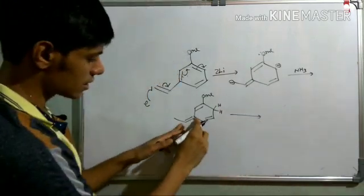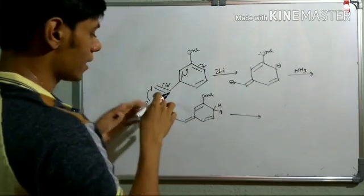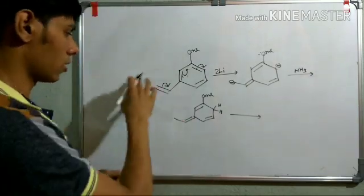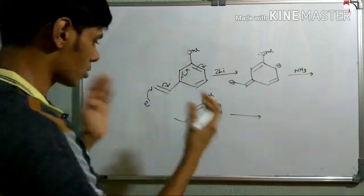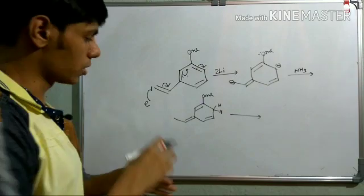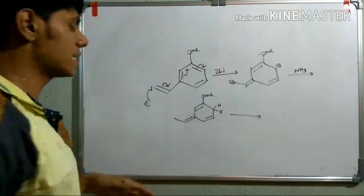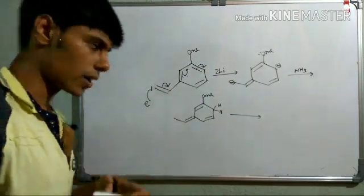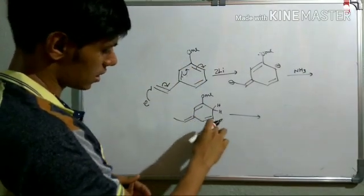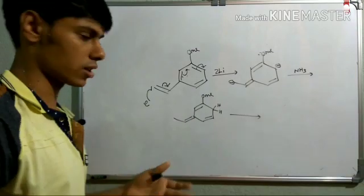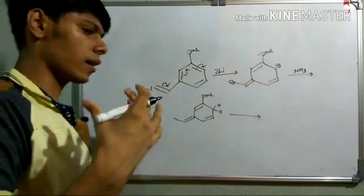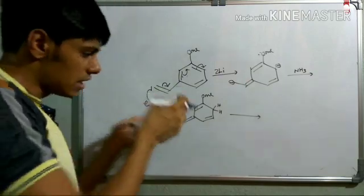You can see these double bonds are still in conjugation. One important thing to note at this point: although an isolated double bond doesn't undergo Birch reduction, in this case this double bond is susceptible to Birch reduction because it is in conjugation with the aromatic ring. This structure is also a conjugated structure, so the probability of Birch reduction is still present.